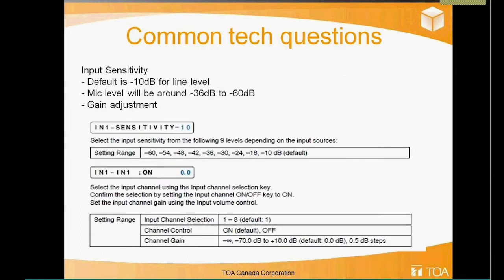On the module sensitivity side: the D001R defaults to minus 10 dB, looking for a CD player, iPod, or other line level source. The D001T is adjustable from minus 10 to minus 60 dB to give you flexibility — whether you're connecting a phone system for all-call, a CD player, or a microphone. A common call we get: someone loads the module correctly, plugs in a microphone, presses page, and nothing happens. The default sensitivity on the D001T is minus 10; to use a microphone, you need to change it to mic level.